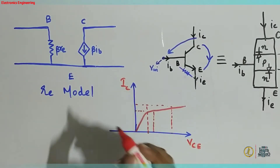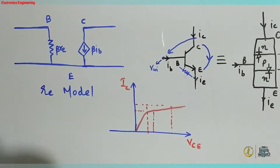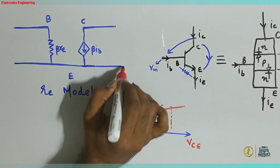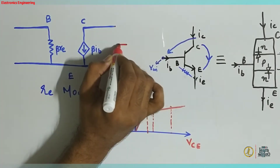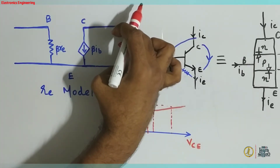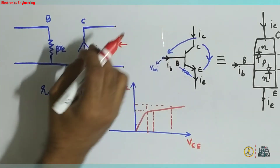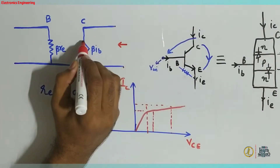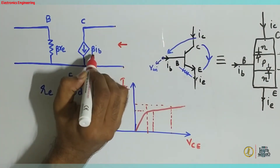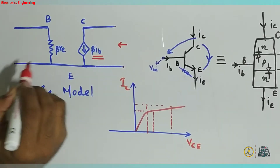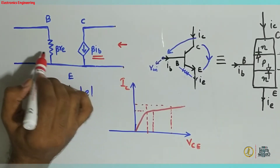This is the current component. This is the current and current model. Here is the current value. This is the current value. Because this current is beta times Ib. So that is the case for the input.